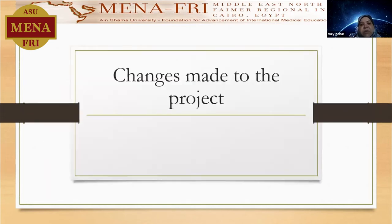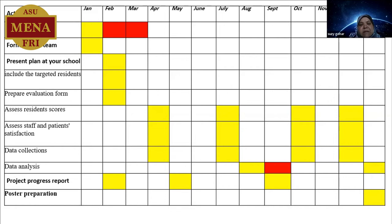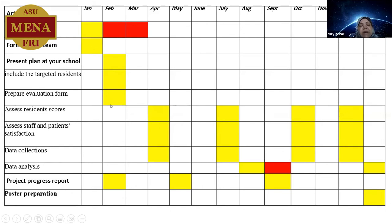Changes made to my project: I didn't make major changes. The IBP approval was delayed because of paperwork and data analysis issues. The project team was formed, I did a workshop, I met the residents and the trainers, I formed the team, I prepared the evaluation form, and I completed the first evaluation including the specific baseline evaluation of the residents.